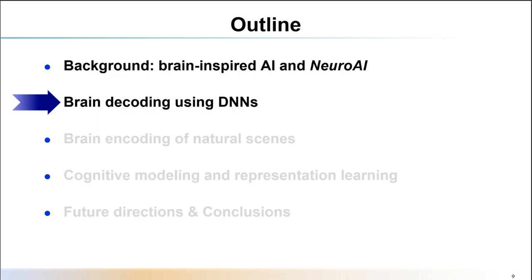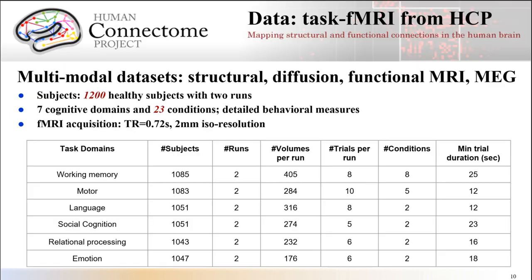We will start with brain decoding and show some interesting findings. In order to properly train a DNN model, we need a large dataset to start with. Here we used the HCP task fMRI database acquired from over 1,000 healthy adults, consisting of seven different cognitive domains and more than 20 task conditions. It provides tremendous data resources for the model training in the following.